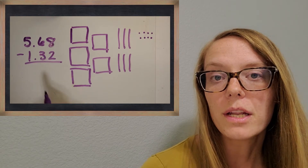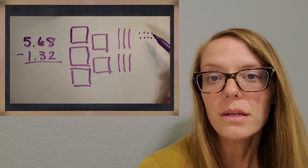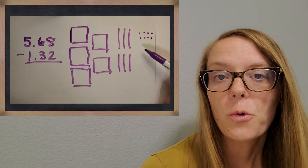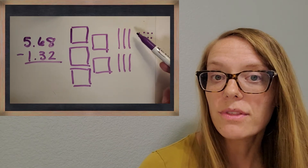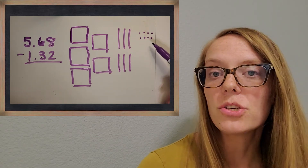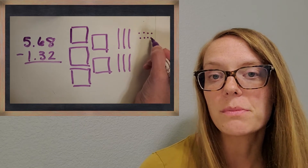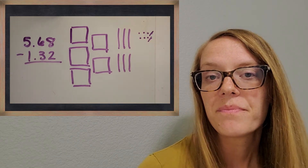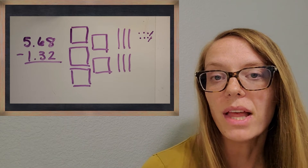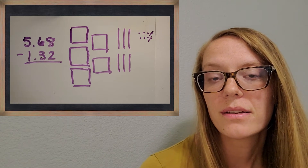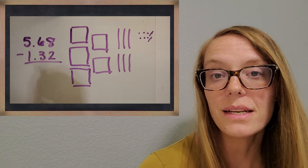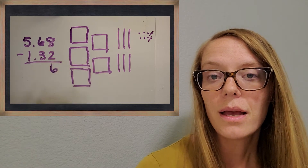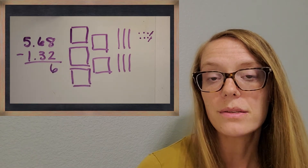We're going to use those little units as the hundredths. We have 8 of them. Let's just take away 2. I love how base 10 blocks make it so easy to take away. How many do you have left? Great — you have 6 of those left. So we're going to put the 6 as our answer in the hundredths place.